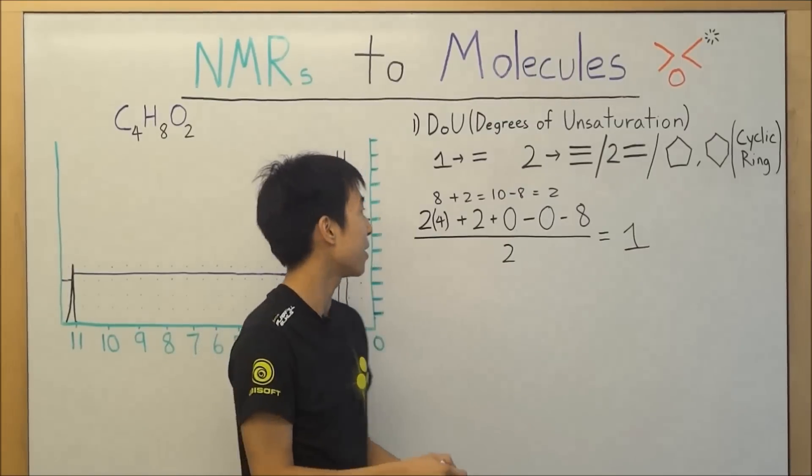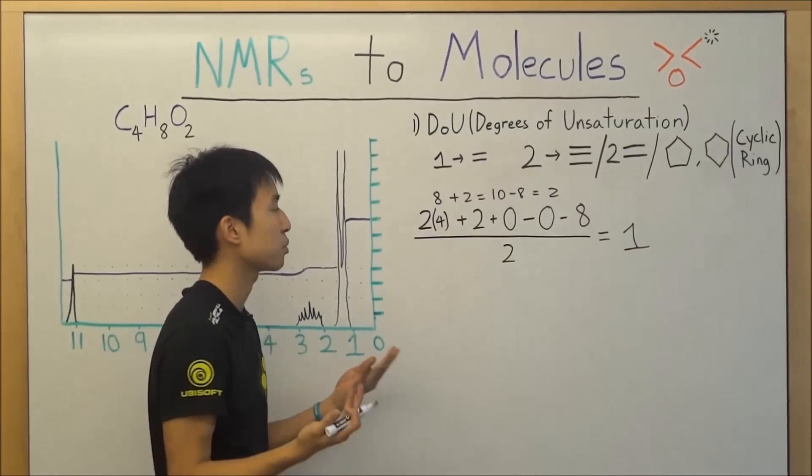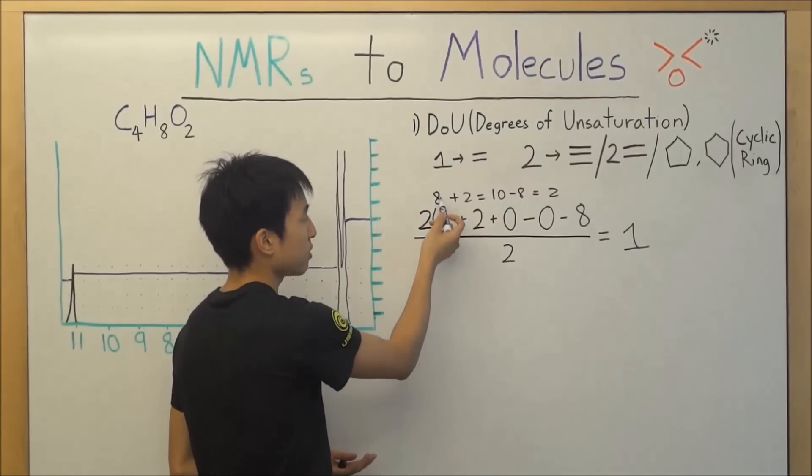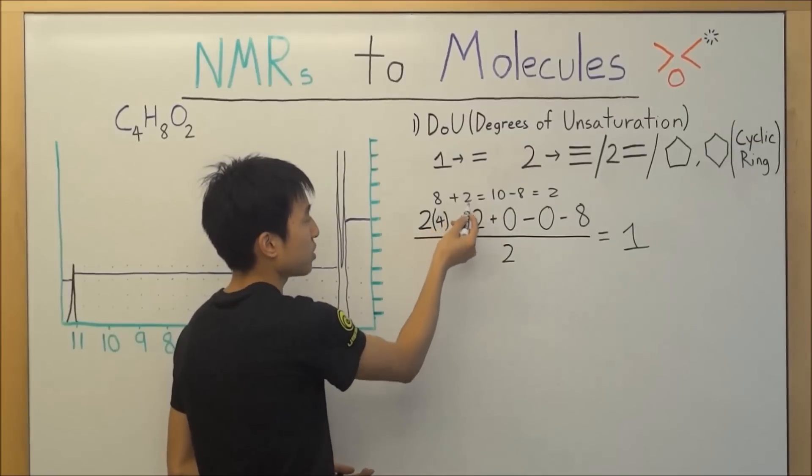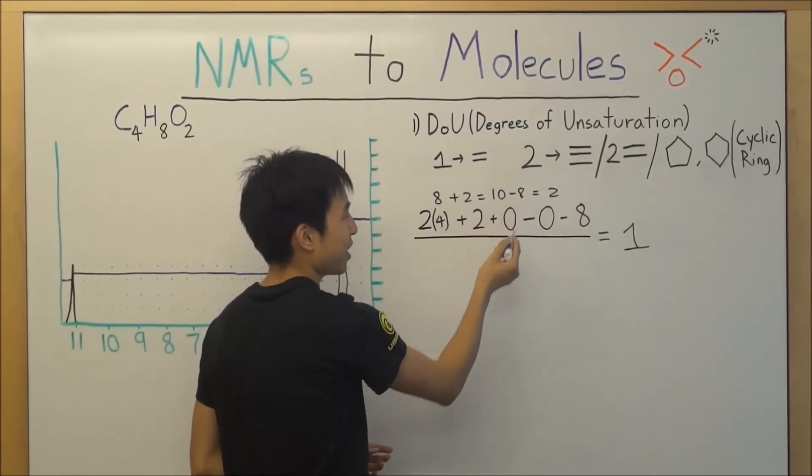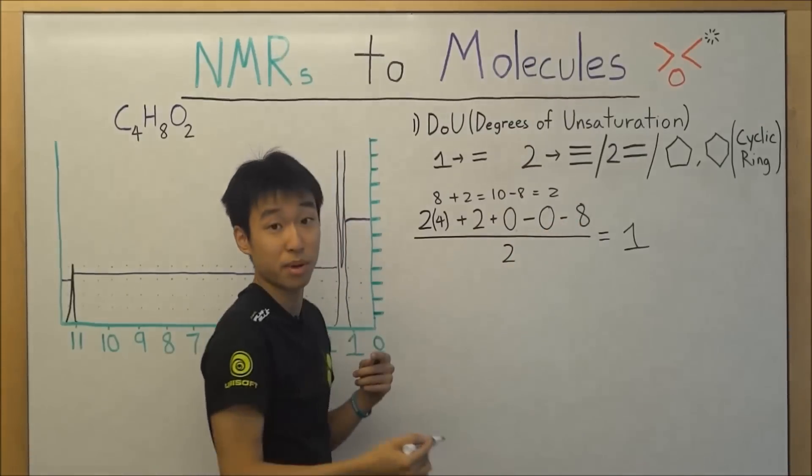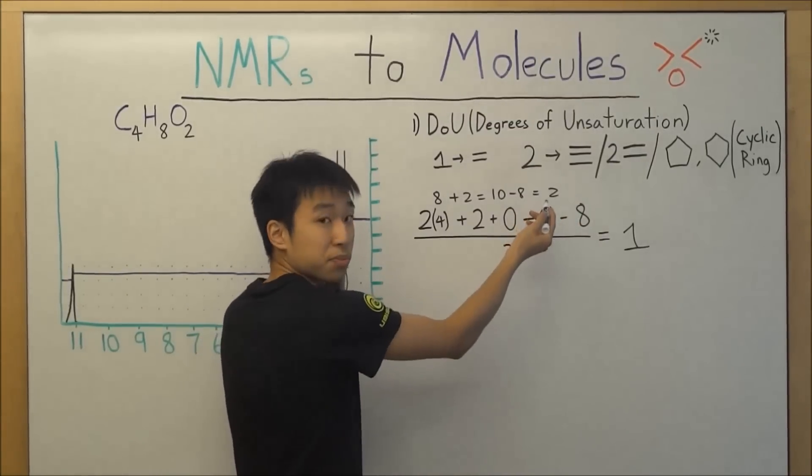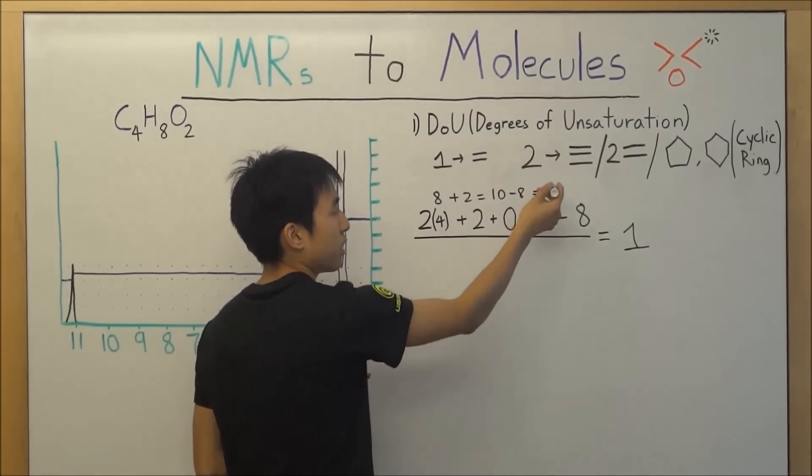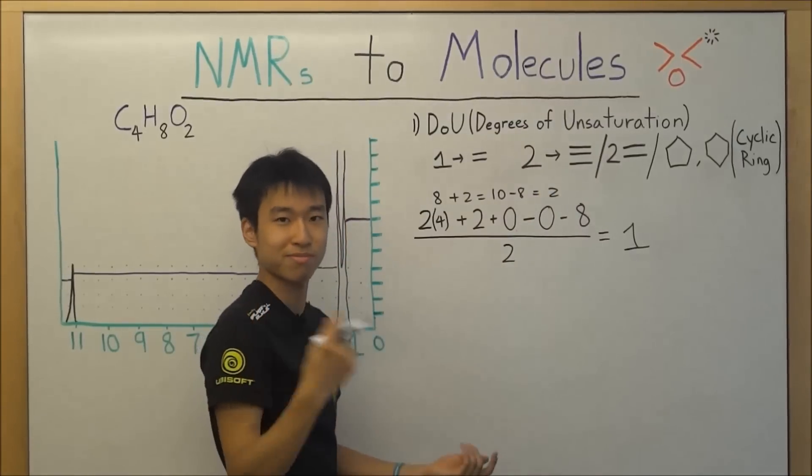But let me, in case you got it wrong, let me just walk you through it. Two times the number of carbons, so four gives me eight, plus two because that's just in the equation, that gives me ten minus eight for the eight hydrogens in my chemical formula. It gives me two. There were no nitrogens and no halides, so that's why zero and zero. And two divided by two is equal to one.